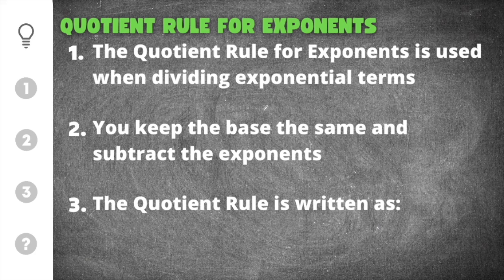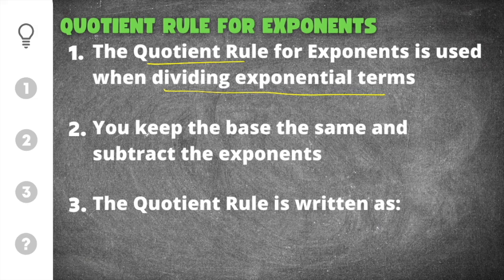As you can see, there are three important things that we need to remember when solving the quotient rule for exponents. The first thing you need to know is that the quotient rule is used when dividing exponential terms — so this is going to be for division. When you use the quotient rule, you keep the base the same and you subtract the exponents.